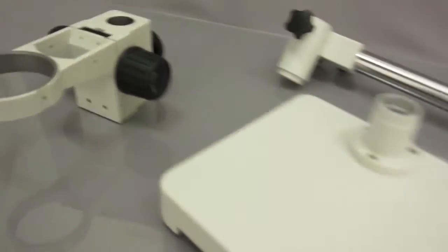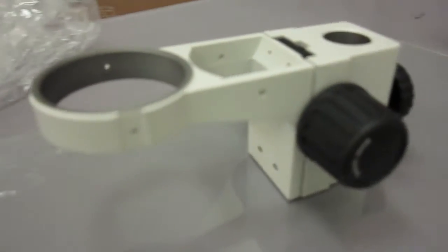There's a number of different parts. First, you have the focusing rack. That's where the head of the microscope is placed.